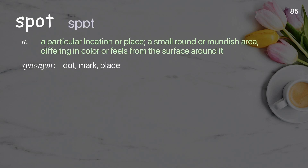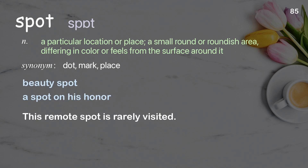Spot: A particular location or place; a small round or roundish area differing in color or feel from the surface around it. Examples: Beauty spot. A spot on his honor. This remote spot is rarely visited.